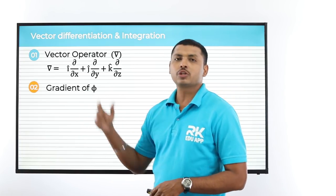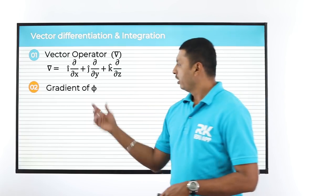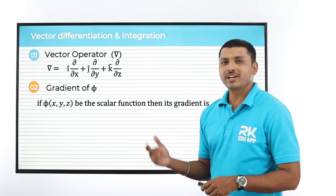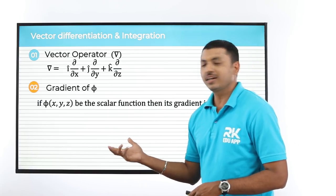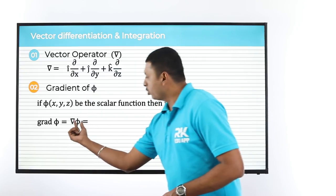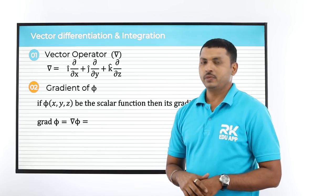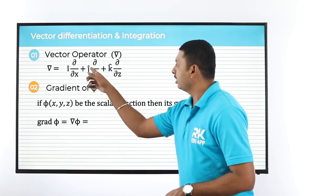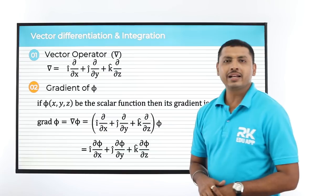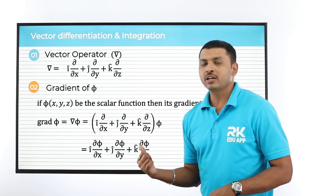Gradient is a major operation done with a scalar function. If φ(x,y,z) is the scalar function, then its gradient is written as gradient of φ or del φ. Between the two, do not write dot or cross — just join them as del φ. Using del's formula and multiplying φ inside, we get i del φ/del x plus j del φ/del y plus k del φ/del z.